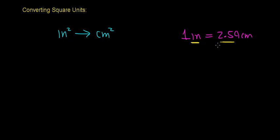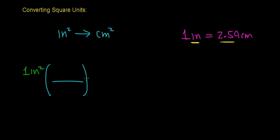We're going to use this linear relationship to convert between square units. Let's begin with a simple problem: converting one inch squared over to units of centimeters squared. Just like when converting linear unit relationships, we need to multiply by a conversion factor. We'll use the linear relationship between the inch and the centimeter, putting one inch on the bottom and 2.54 centimeters on the top.